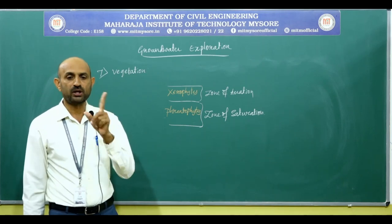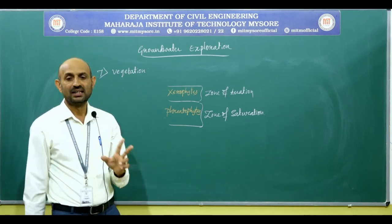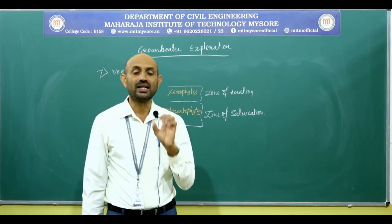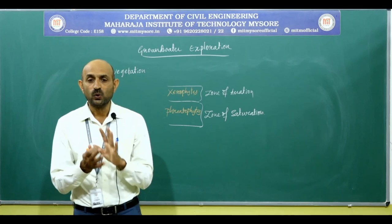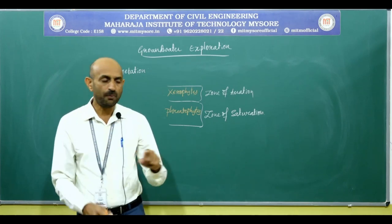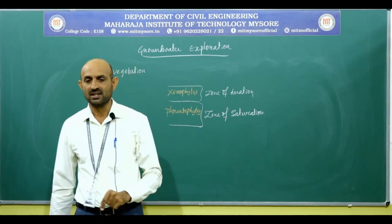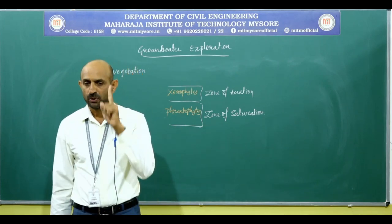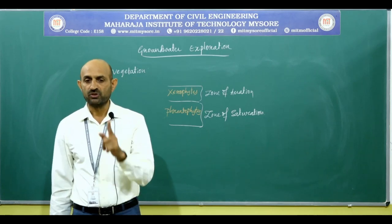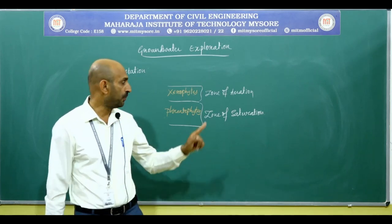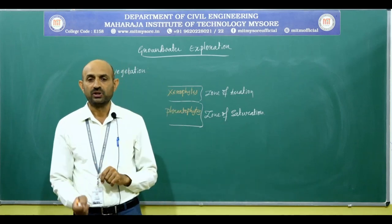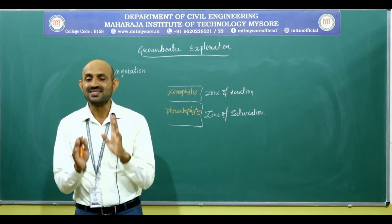The absence of Phreatophytes suggests a deficiency of groundwater in that region. If the terrain is composed of Phreatophytes, it provides a substantial amount of water. If the terrain is composed of an enormous number of xerophytes, that denotes paucity — lack of groundwater.